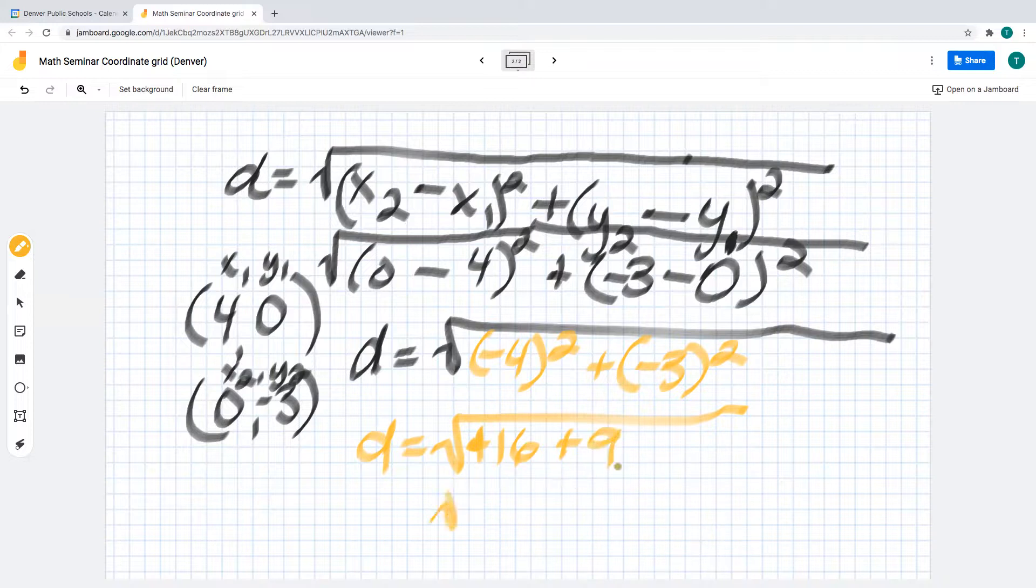So 9 plus 16, the distance is the square root of 25, and we all know that the square root of 25 is 5, because 5 times 5 equals 25.